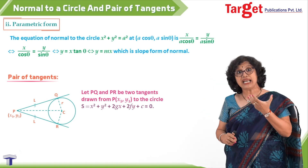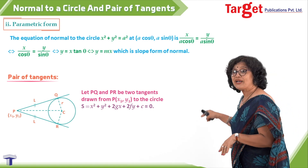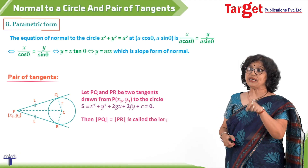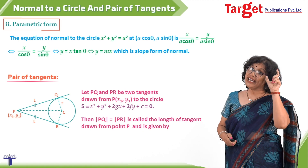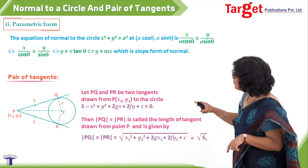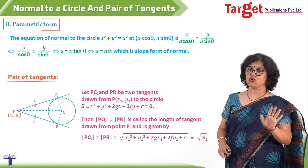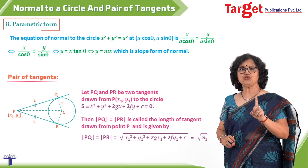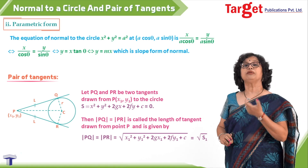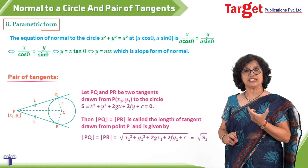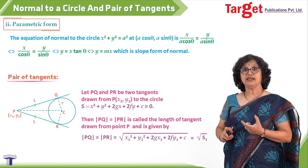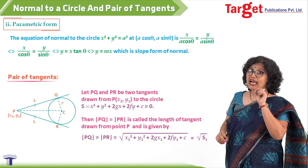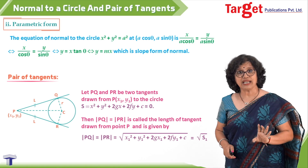If PQ and PR are two tangents from point (x1, y1) and the circle's equation is x² + y² + 2gx + 2fy + c = 0, then PQ = PR = √(x1² + y1² + 2gx1 + 2fy1 + c). The expression under the square root is S1 — a notation used in previous videos. So the length of the tangent is √S1.